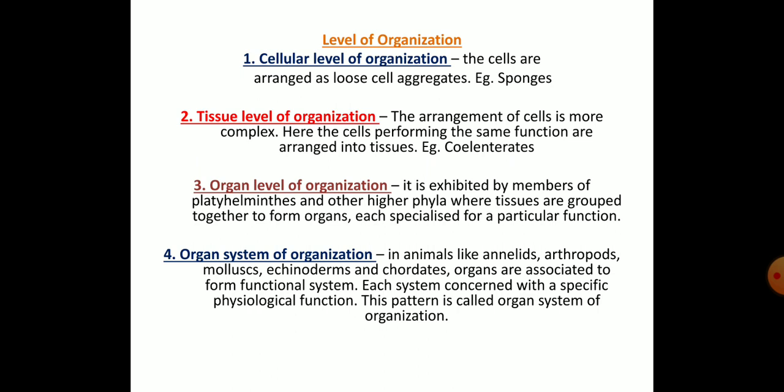At the tissue level, the arrangement of cells is more complex — cells performing the same functions are arranged into tissues. Examples are the cnidarians. At the organ level of organization, tissues merge together to form organs. This is exhibited by members like Platyhelminthes and other higher phyla, where tissues are grouped together to form organs.